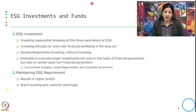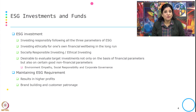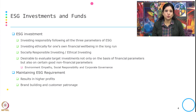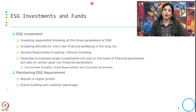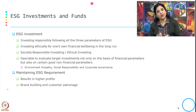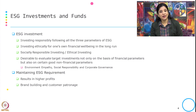Starting with ESG investment and funds — which we have already discussed during sustainability reporting — ESG investment is investing responsibly following all three parameters of ESG: environment, social, and governance. It can also mean investing ethically for one's own financial well-being in the long run. This is also known as socially responsible investment or ethical investment. It is desirable for organizations to evaluate target investments not only on financial parameters, but also on non-financial parameters like environmental empathy, social responsibility, and corporate governance. In return, maintaining ESG requirements results in higher profit, brand building, and customer patronage.